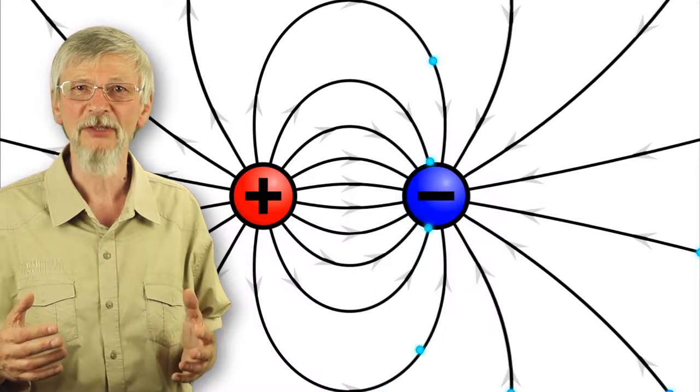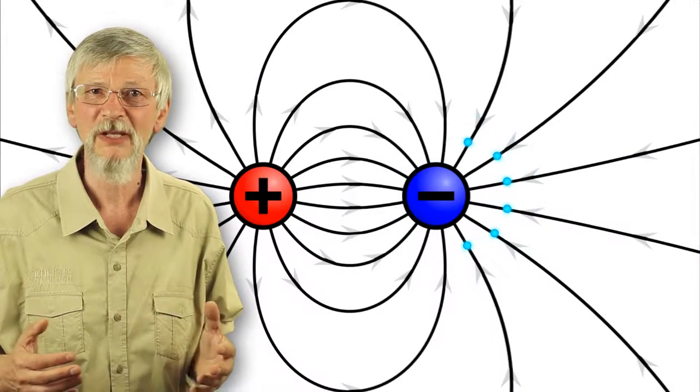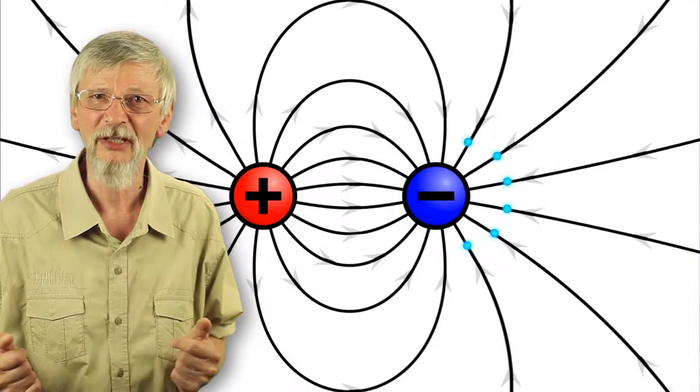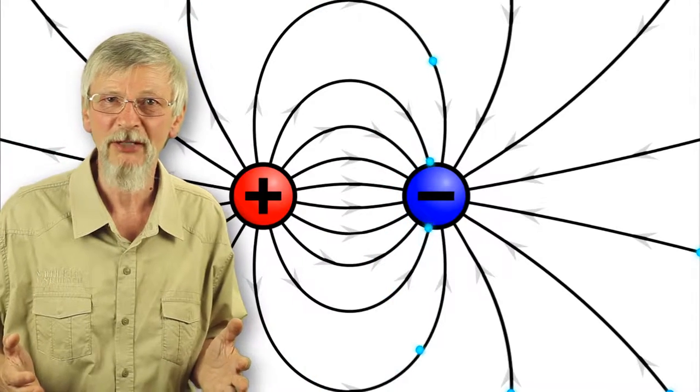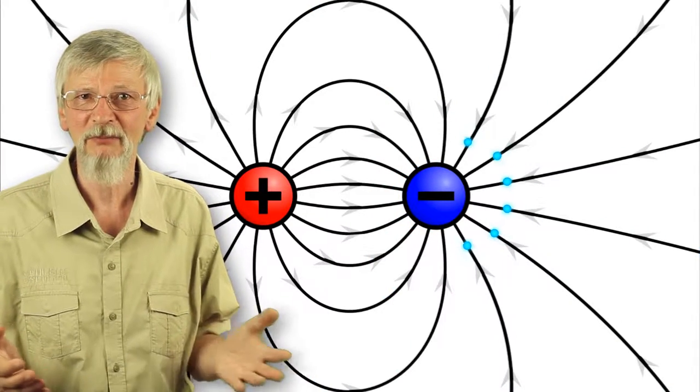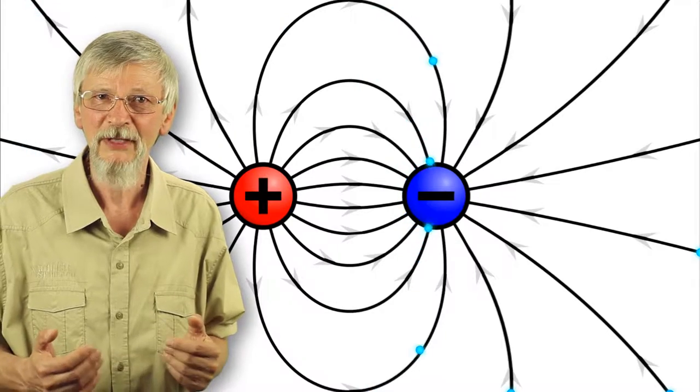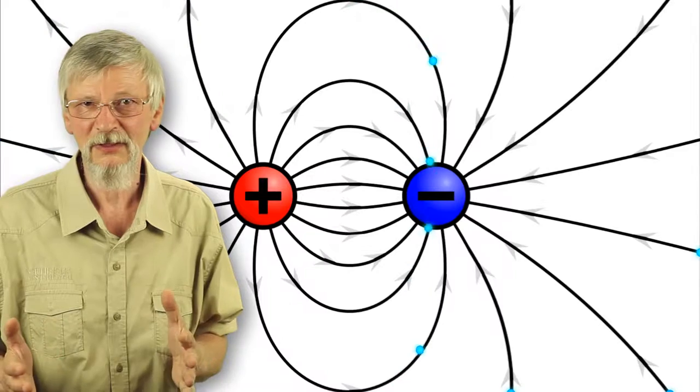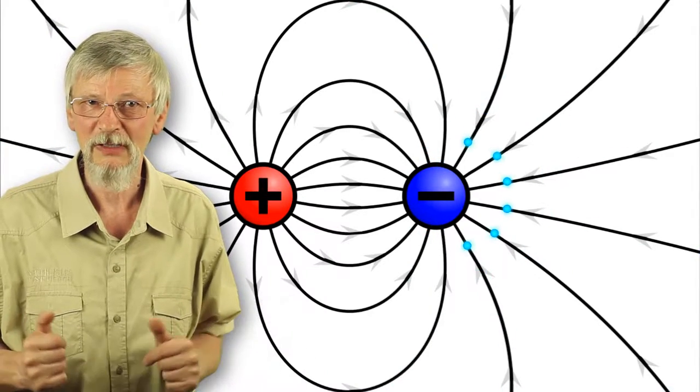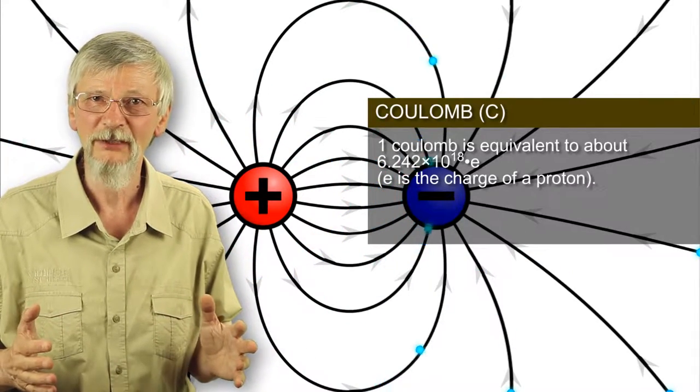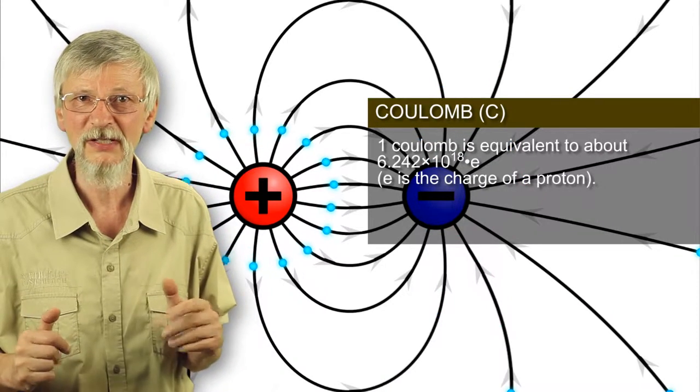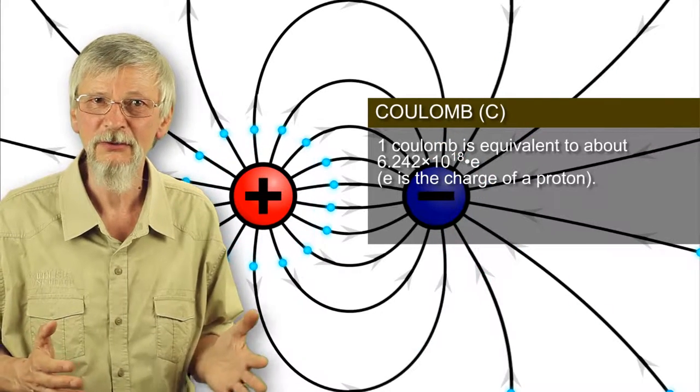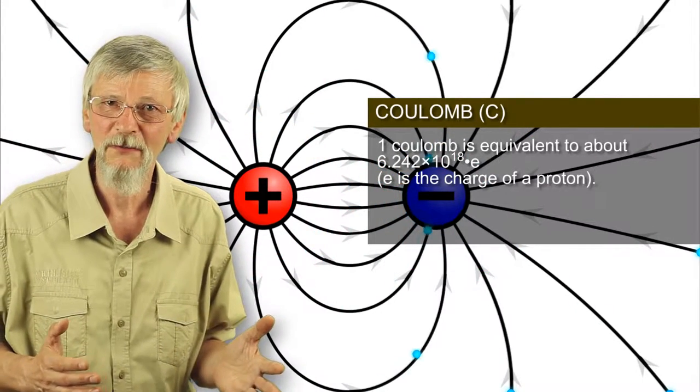Electric charge is a fundamental property of some subatomic particles, which determines their electromagnetic interaction. Electrically charged matter is influenced by and produces electromagnetic fields. The interaction between a moving charge and an electromagnetic field is the source of electromagnetic force. The SI unit of quantity of electric charge is the Coulomb, which is equivalent to the charge of 6.242 times 10 to the power of 18 protons.